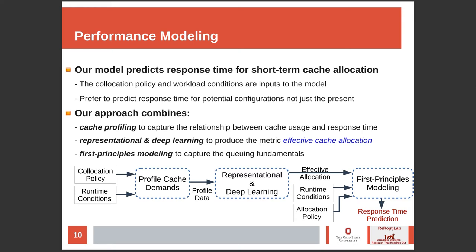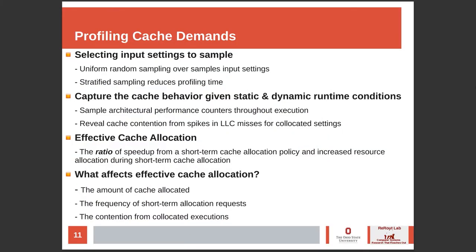This work describes a model that predicts response time for short-term cache allocation as a function of co-location policy and runtime conditions. Our approach is composed of cache profiling, representational and deep learning, and first principles modeling. Profiling captures the relationship between cache usage and response time. A stratified sampling technique clusters input settings according to effective cache allocation so that random sampling occurs around the various clusters equally, avoiding the time-intensive uniform random sampling.